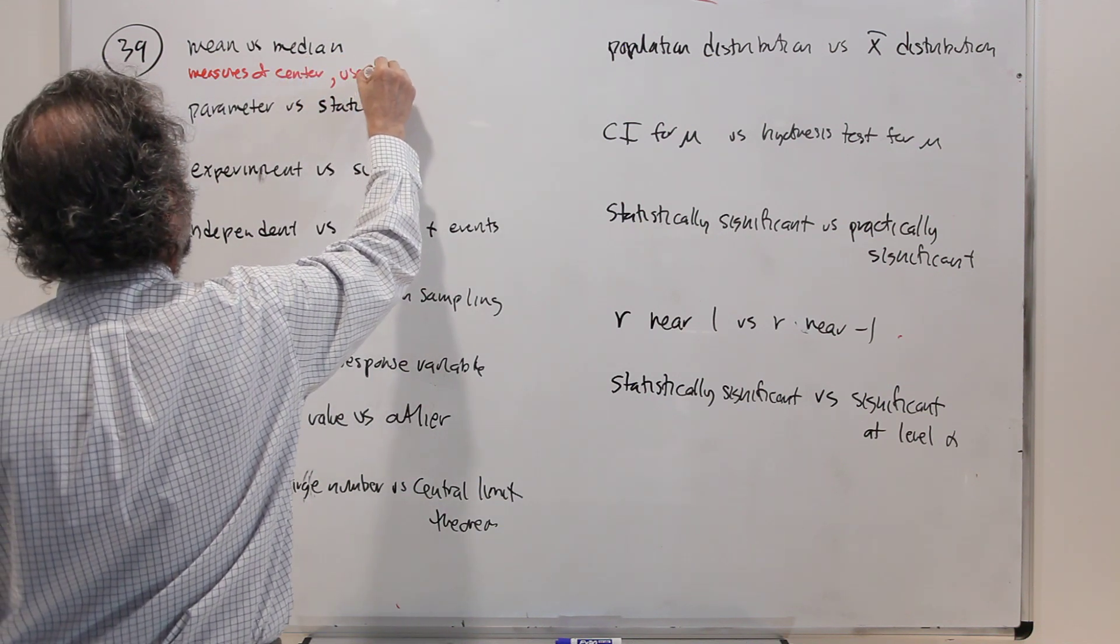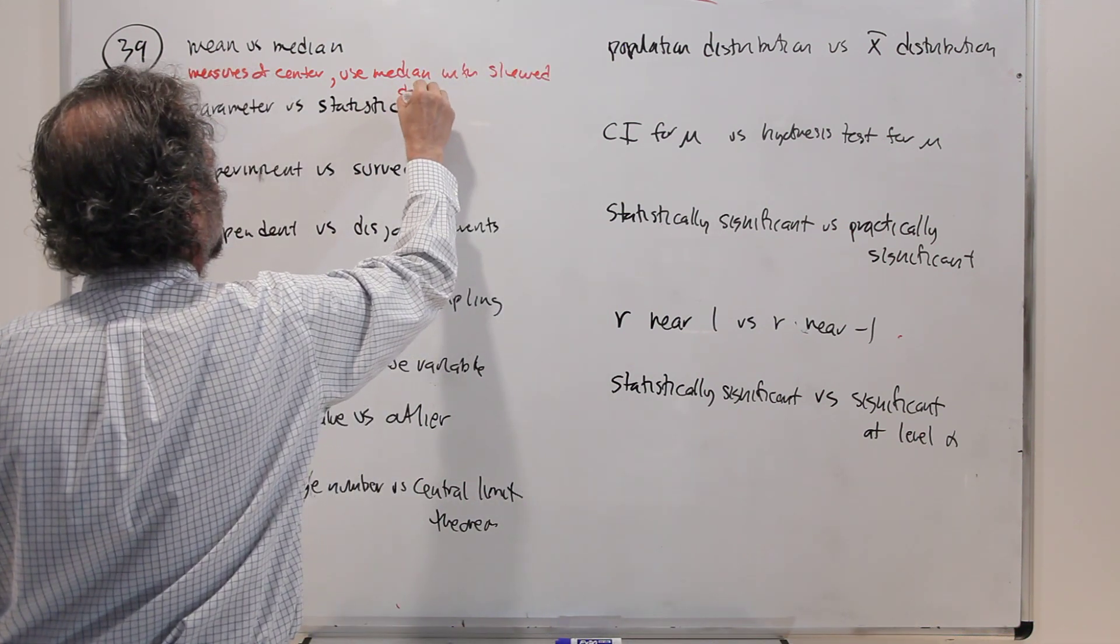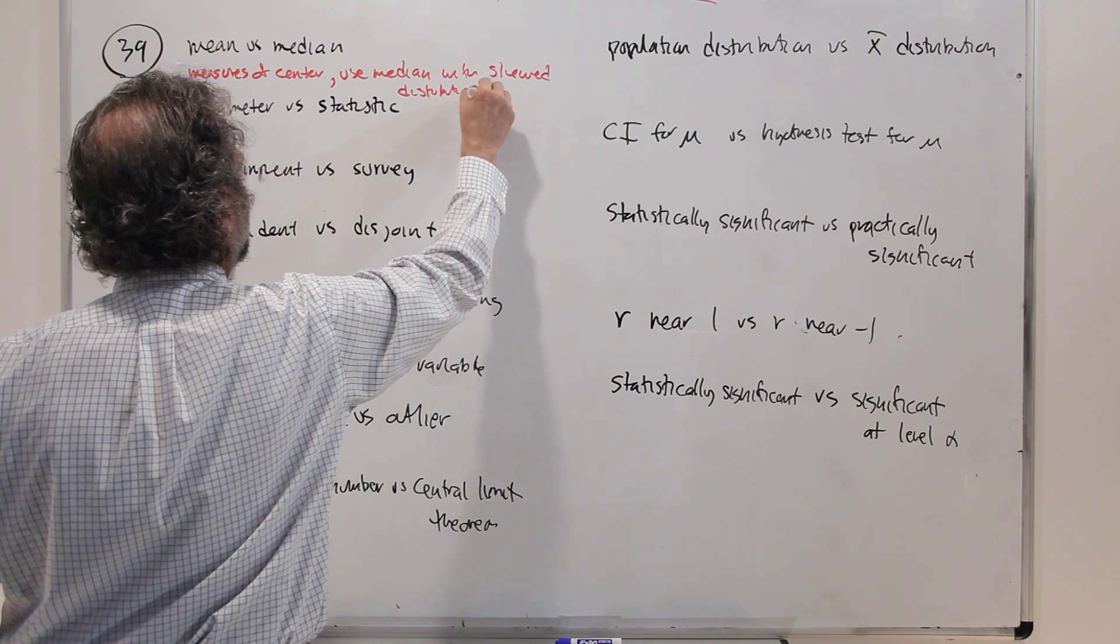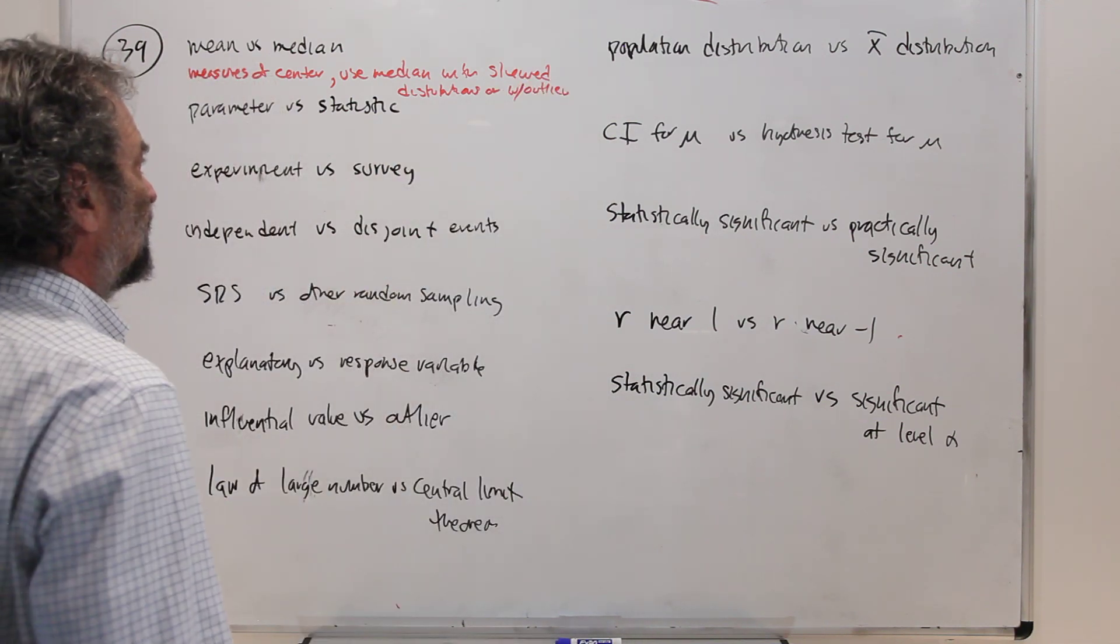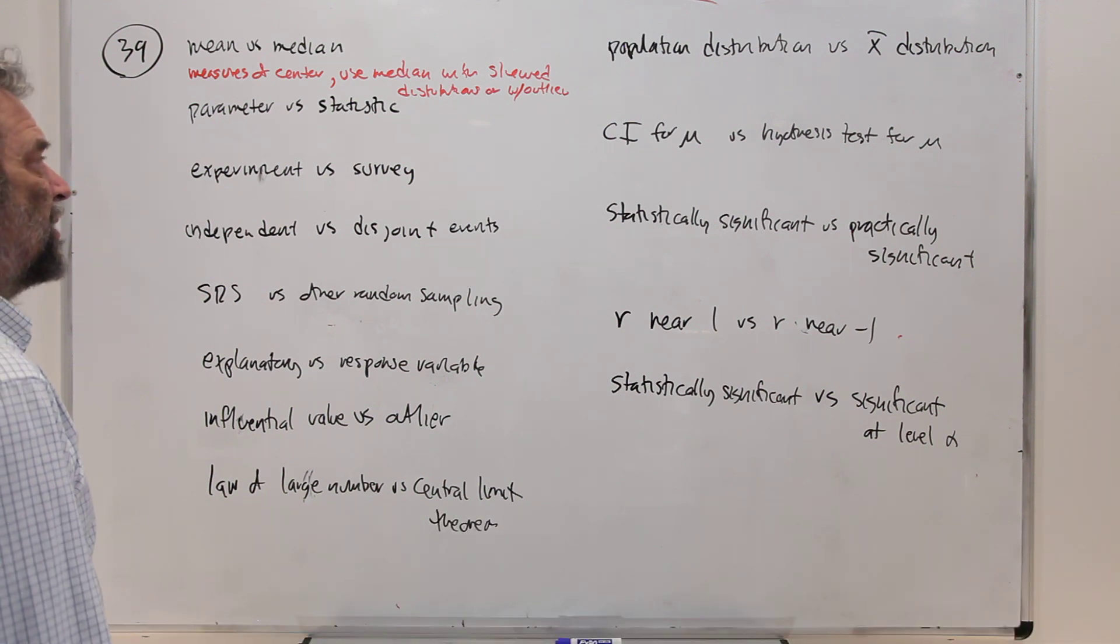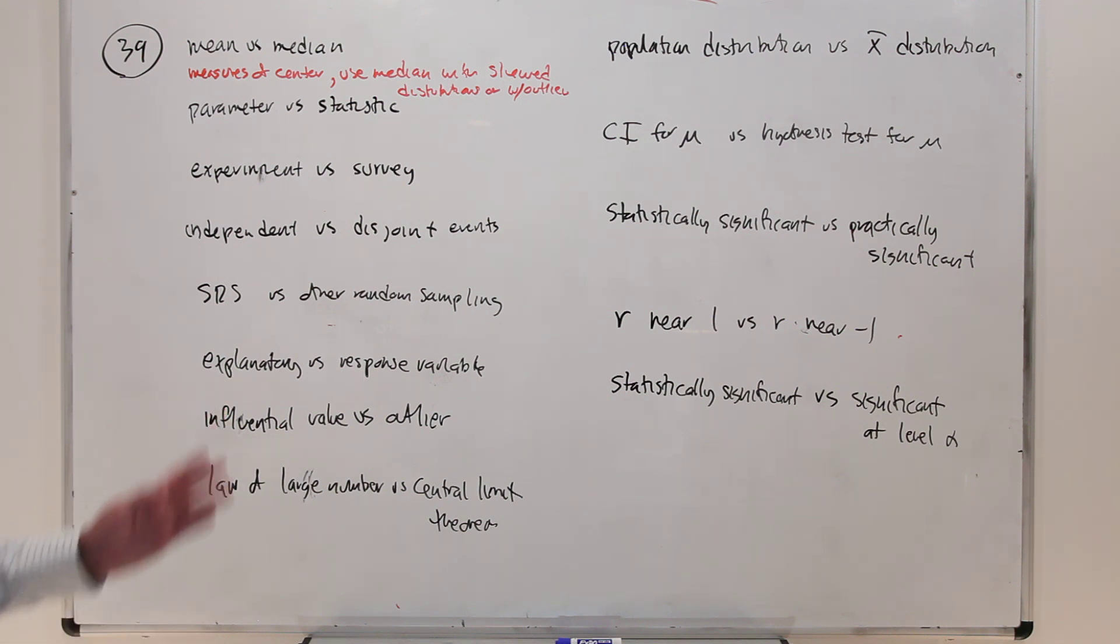We use the median with skewed distributions or with outliers. Maybe that makes sense. Otherwise we use the mean. So if it's symmetric, no outliers, the mean is a good measure of center. It comes out to be the same as the median. It has some desirable qualities that the median doesn't have. Say if you're computing center with whole numbers, then the median will be mostly just like one of those numbers where the mean might represent the center in a more effective way. So we tend to use the mean with symmetric distributions and the median with skewed distributions or if there's outliers.